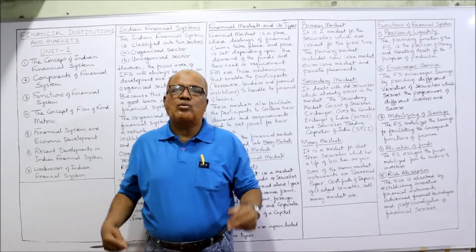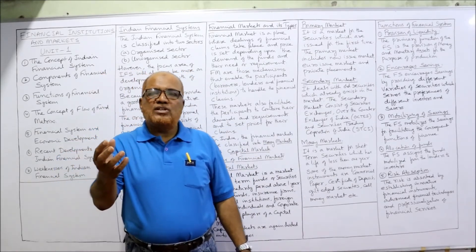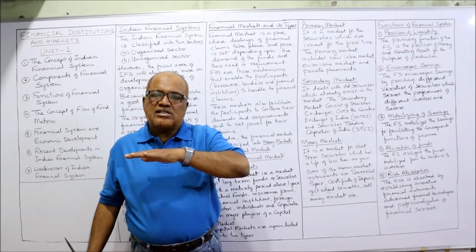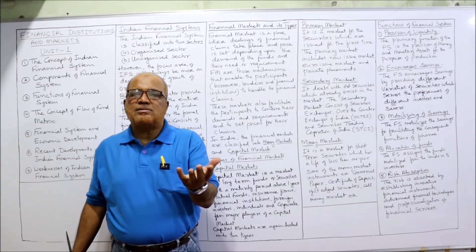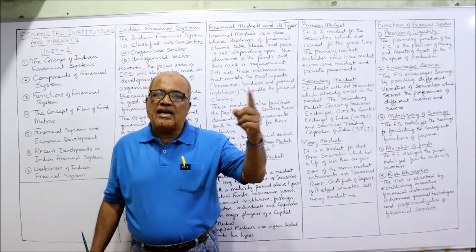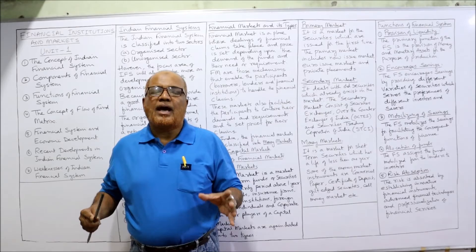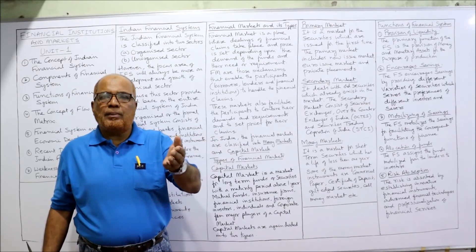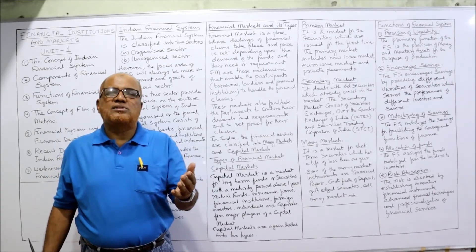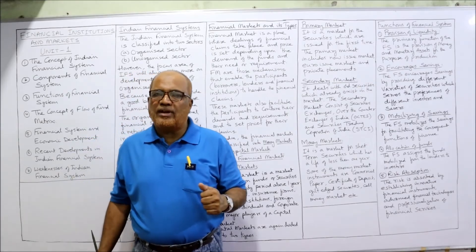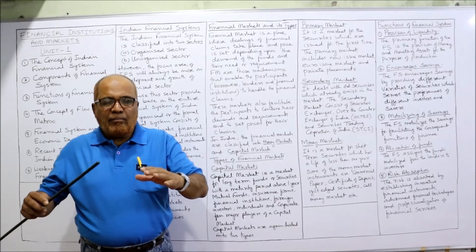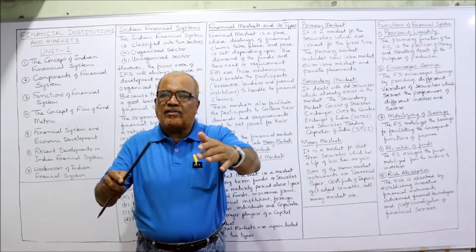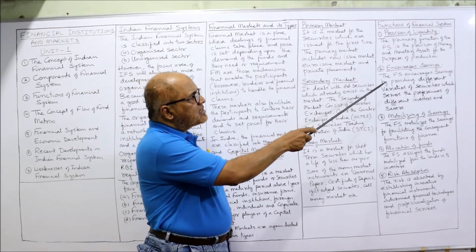The second function is encouraging savings. The amount invested in a company comes from people's savings. After spending on day-to-day requirements, people have surplus money which can be saved and invested. The Indian financial system has the function of encouraging people's savings. If there are no saving opportunities, people will consume more, which causes problems like inflation — cost-push or demand-pull. So the government encourages people to save money through the financial system.